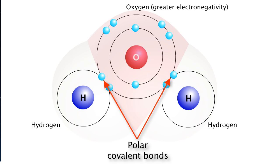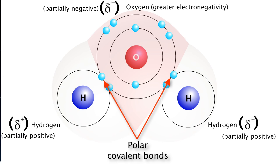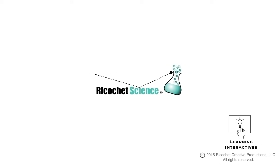In a polar covalent bond, one of the atoms, in this case oxygen, has a slightly negative charge since it has a greater affinity for electrons, while the other atom, hydrogen, has a slightly positive charge because its electrons are spending more time around the oxygen atom.